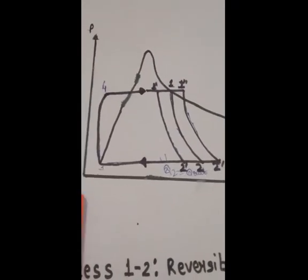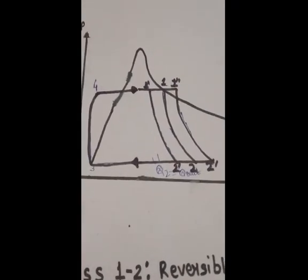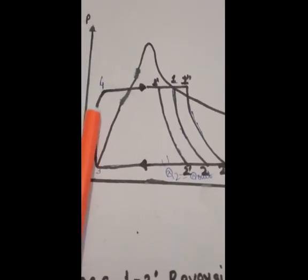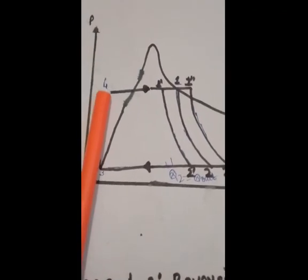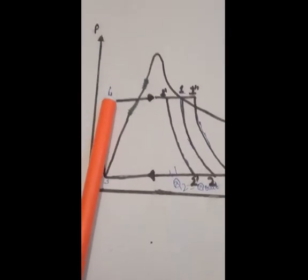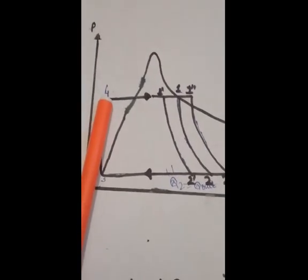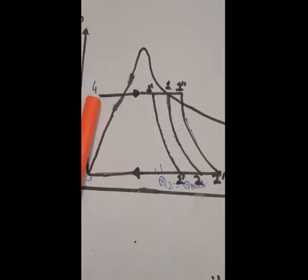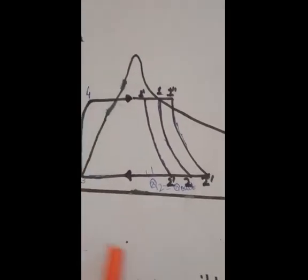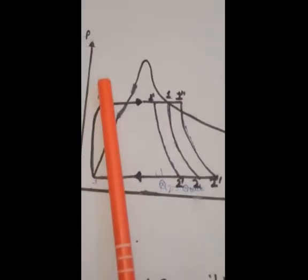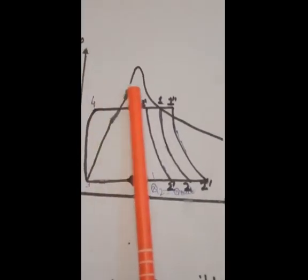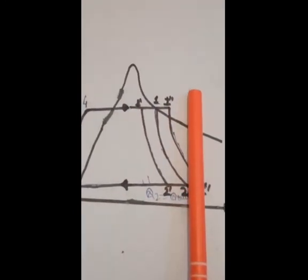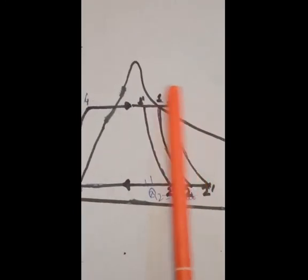From 3 to 4 is the rising of liquid water pressure in the feed pump, where the pressure is increasing. From 4 to 1 is a constant pressure process in which the transfer of heat in the boiler is occurring.